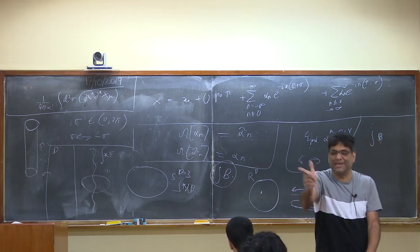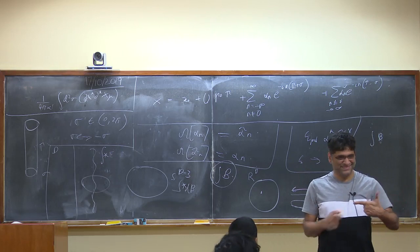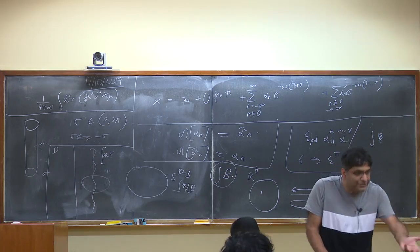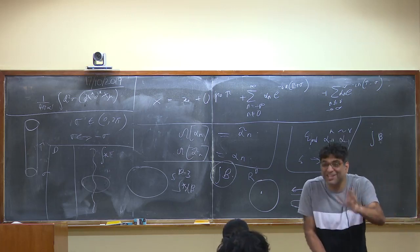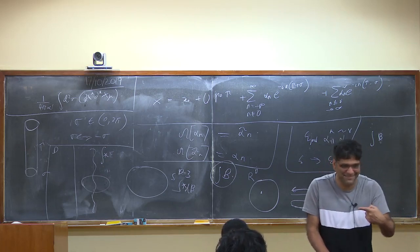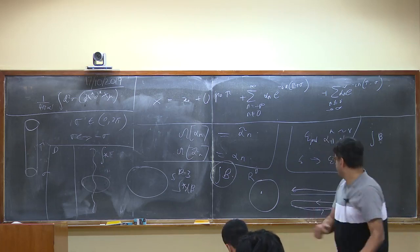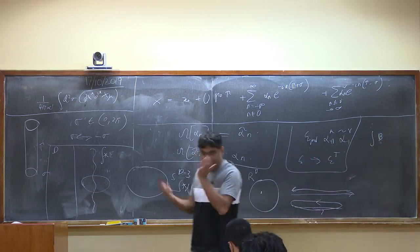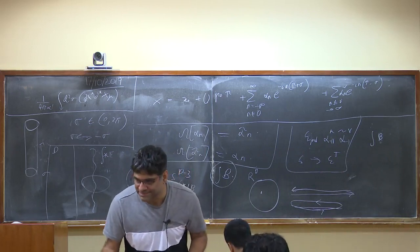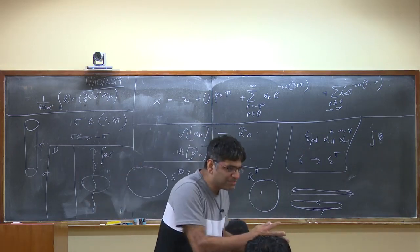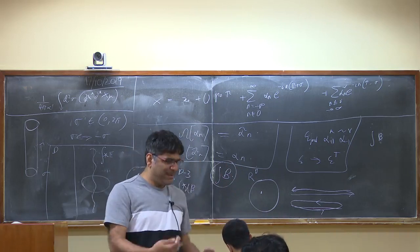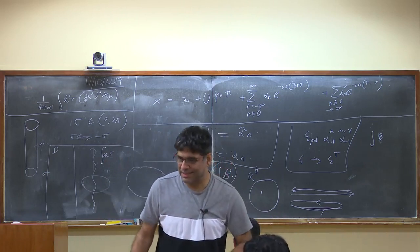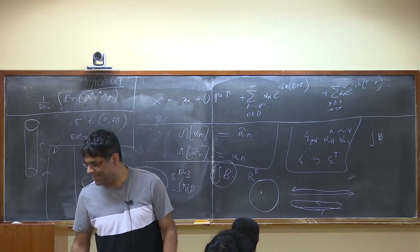In the unoriented theory, since there's no arrow associated with the string, it should carry no charge. That's exactly what we see: B is projected out of the spectrum. It would have been odd if there were a gauge field with nothing charged under it. The fact that B is projected out of the unoriented theory is the statement that strings are uncharged in this theory.